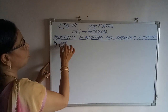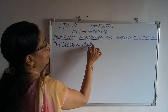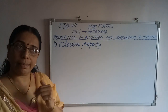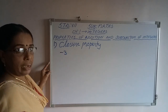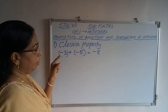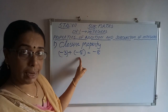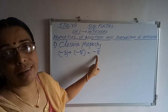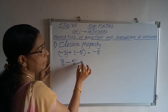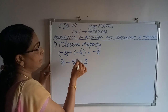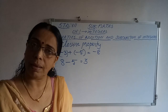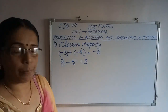The first property: closure property. When you add two integers or when you subtract two integers, the result is also another integer. For example, minus 3 is an integer. When you add minus 3 with minus 5, we get minus 8. Minus 3 is an integer, minus 5 is another integer, and the sum minus 8 is also an integer. For subtraction: 8 minus 5 gives 3, and 3 is also an integer. So we can say integers are closed under addition and subtraction.